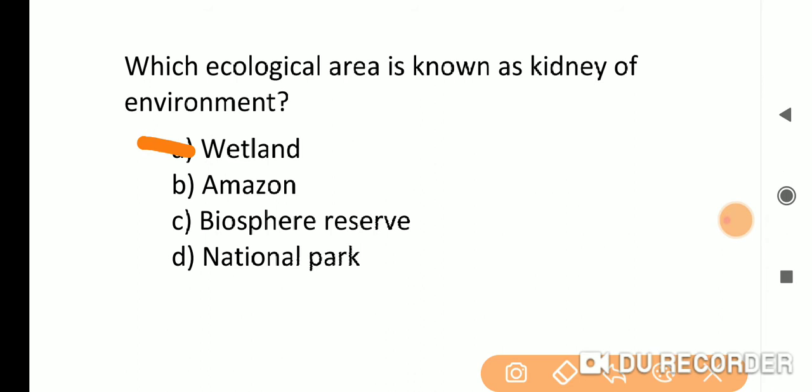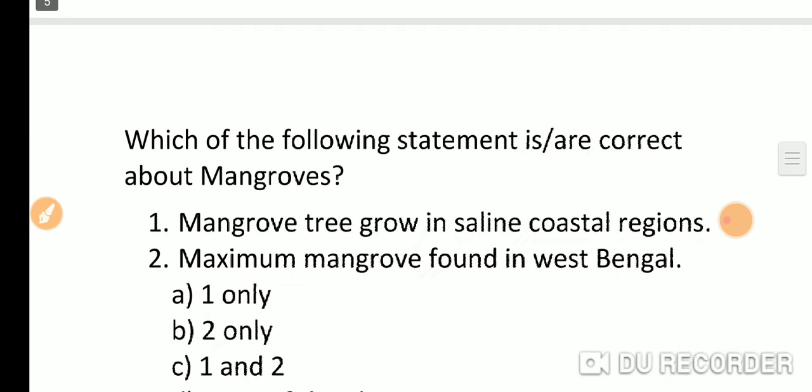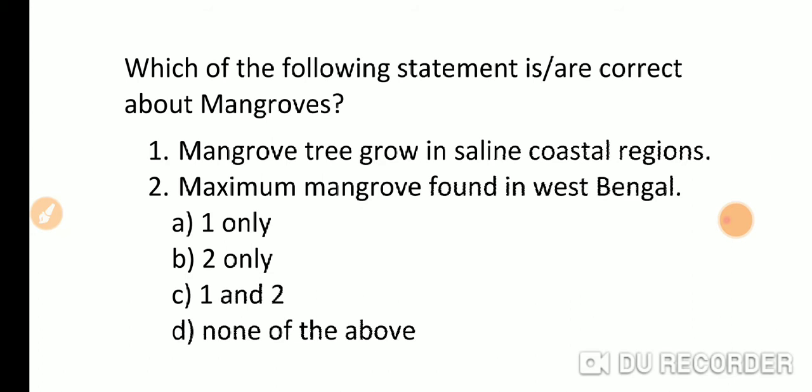Which of the following statement is correct about mangroves? Mangrove trees grow in saline coastal regions, which is correct. Maximum mangroves are found in West Bengal in Sundarban area. So the correct answer will be C.